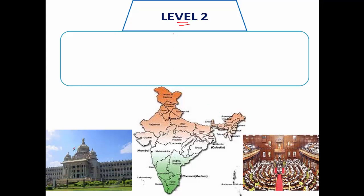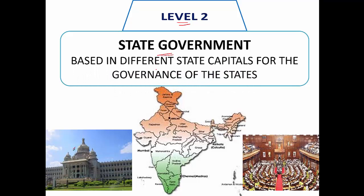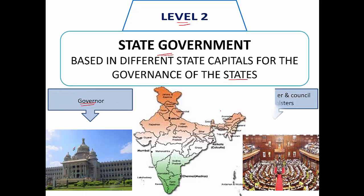At level two we have the state government. As you know, India is divided into a number of states. We have the state government at different state capitals for the governance of these states. The head of each state is the Governor, and we have the Chief Minister and the Council of Ministers to govern the different states of our country.